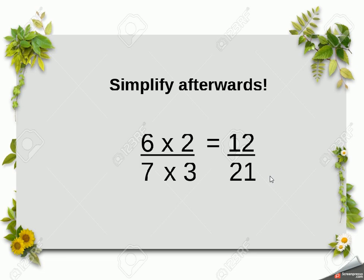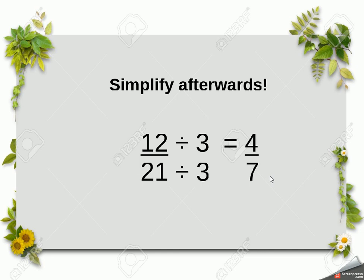But we always have to remember to check to see if we can simplify. And to do that, we look to see if there's a highest common factor. And yes, there is, 3 will go into both 12 and 21. We divide them both by 3. 12 divided by 3 is 4, and 21 divided by 3 is 7. The answer is 4/7, 4 over 7.